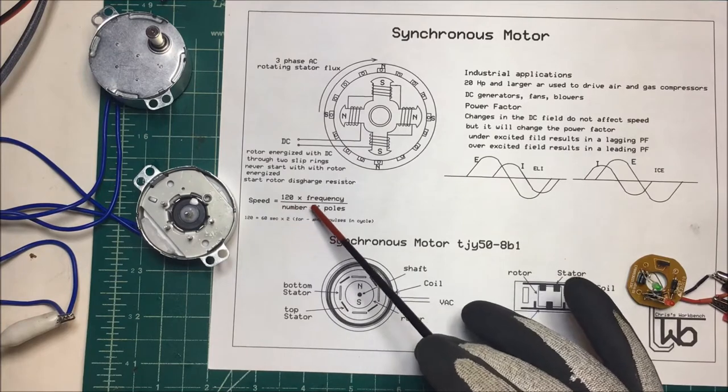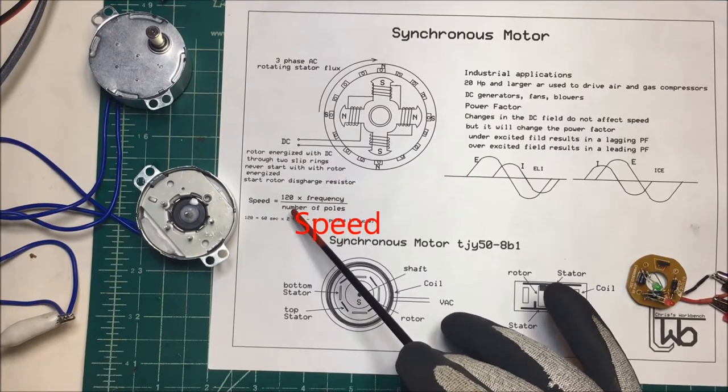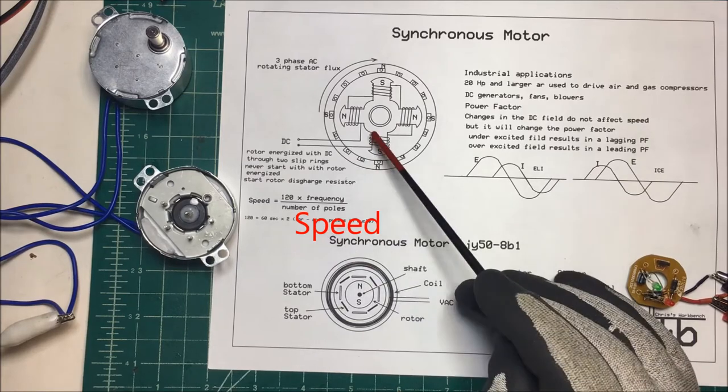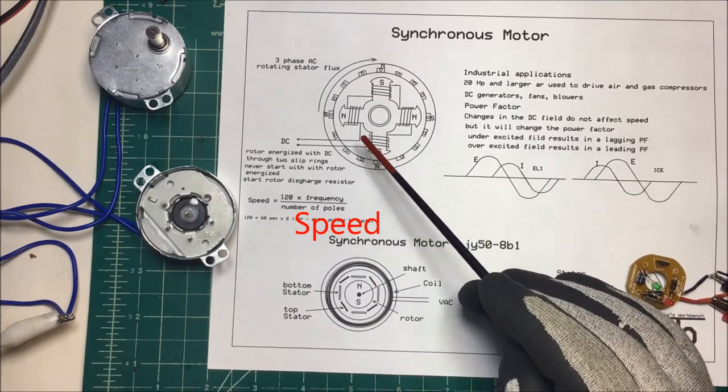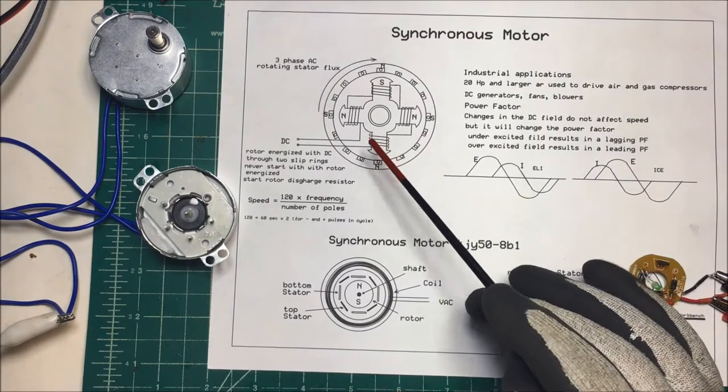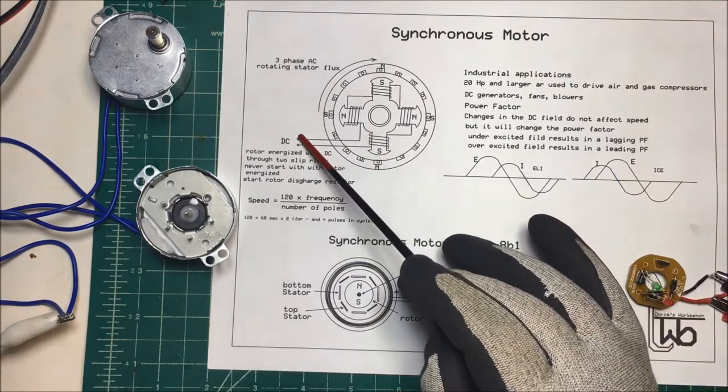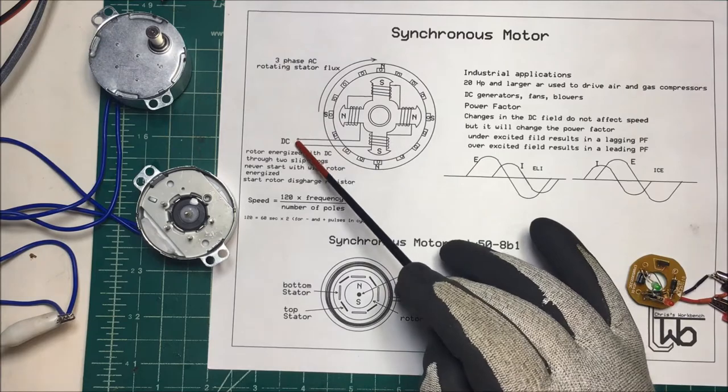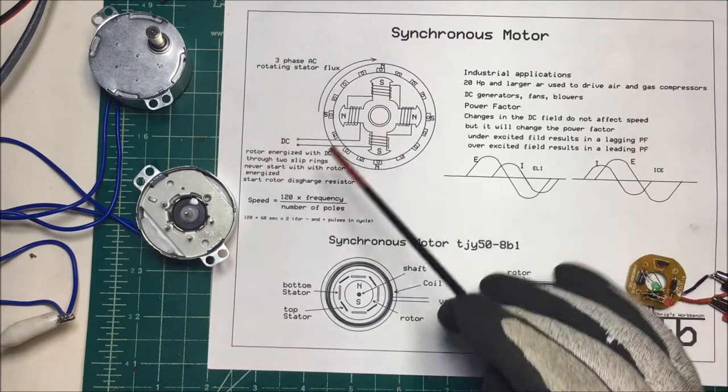Now on these motors, you never want to start it with this rotor energized. Most of the time what they'll do is they'll put a resistor across here to start it, and then they'll open that resistor up and put power to the stator there.